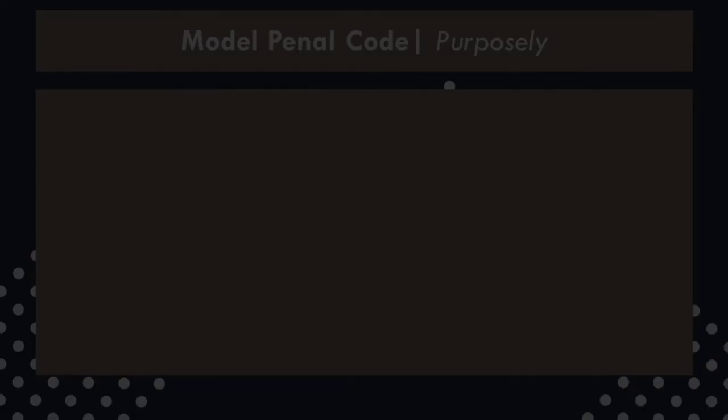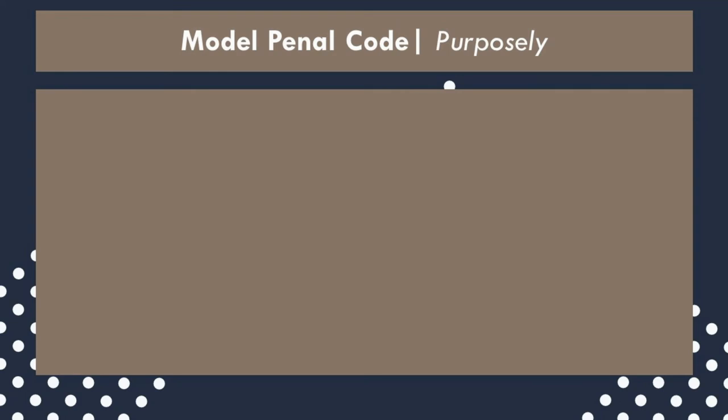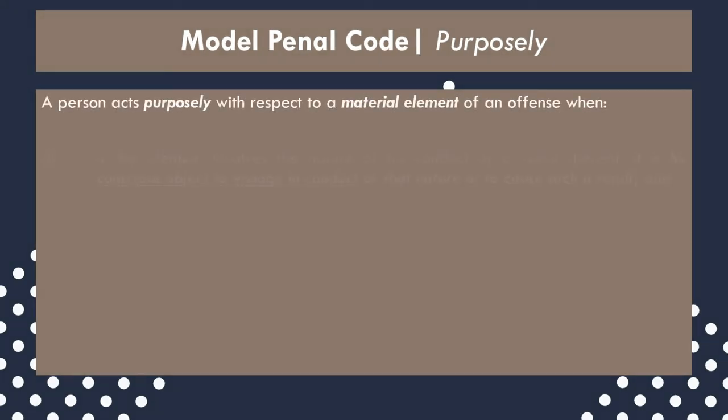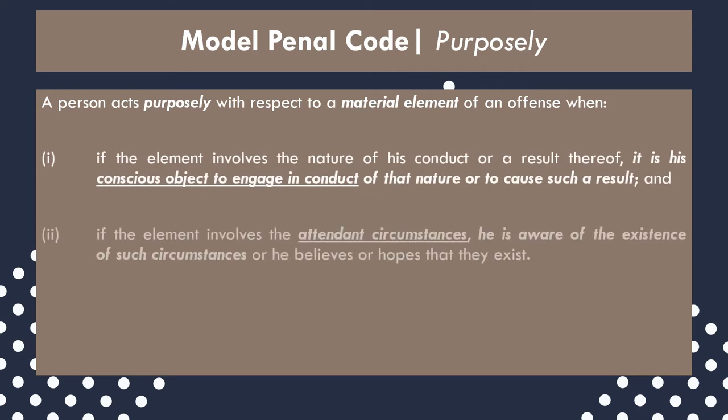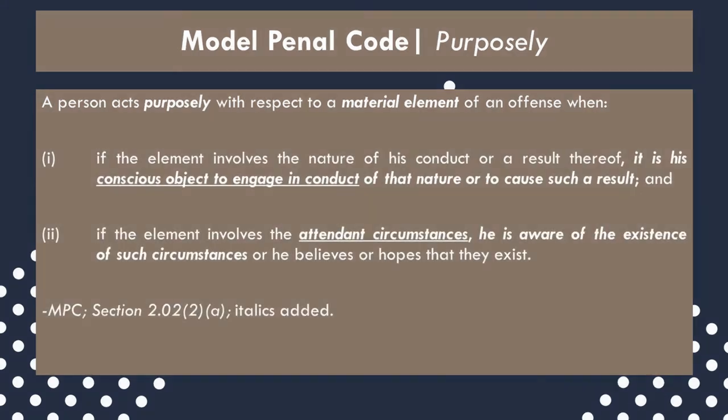To act purposely requires the actor intend the occurrence of a particular outcome — to consciously intend the prohibited outcome. It is the highest level of culpability. The MPC states that: "a person acts purposely with respect to a material element of an offense when the element involves the nature of his conduct or a result thereof, it is his conscious objective to engage in conduct of that nature or to cause such a result; and if the element involves attendant circumstances, he is aware of the existence of such circumstances, or he believes or hopes that they exist."